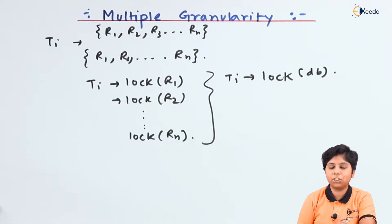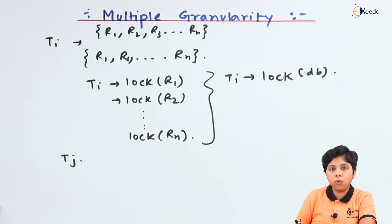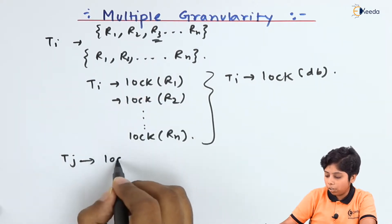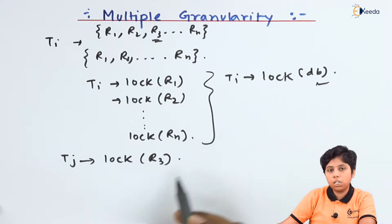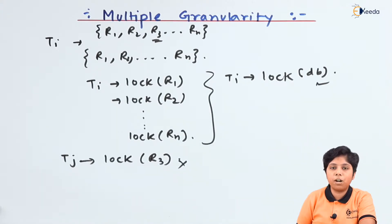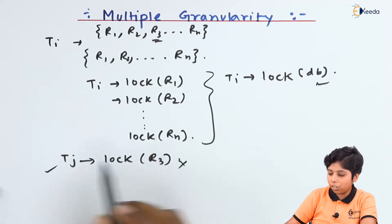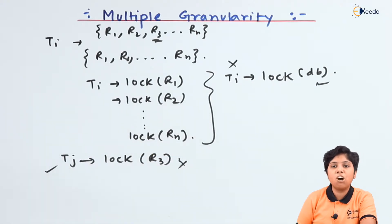Rather than locking every record individually, if it had a single database lock, the transaction could access every record and file in the database. But if another transaction Tj requires a particular record, say R3, it needs to lock just R3. So if the system provides only a database lock, it's impossible for transactions that need just a small portion. And if it provides only record-level locking, there's extra overhead keeping lock information for every record the transaction needs to access.